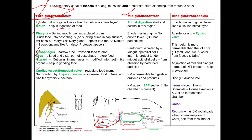The terminal mouthpart leads into a cavity known as the pre-oral cavity. The pre-oral cavity between the hypopharynx and epipharynx is known as the cibarium. The pre-oral cavity between the hypopharynx and salivary duct is known as the salivarium, where the salivary duct opens and secretes saliva.